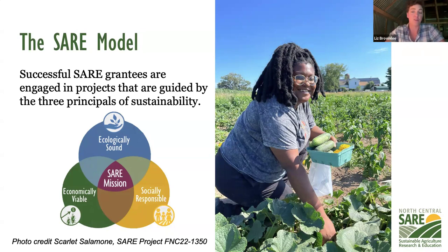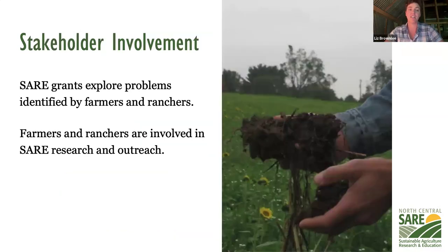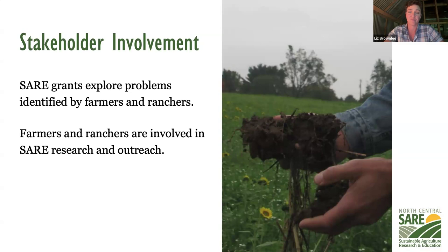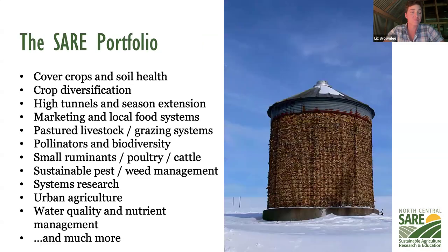In your proposal, you're going to want to make sure to address how you are focusing on sustainable ag practices and principles - not just agriculture overall. You'll probably hear me say that more than once. Our grants explore problems identified by farmers and ranchers, and we definitely encourage you to partner directly with farmers and ranchers if that makes sense for your project. Here's a big-picture list of some of the topics in our portfolio that grantees have tackled over the years.